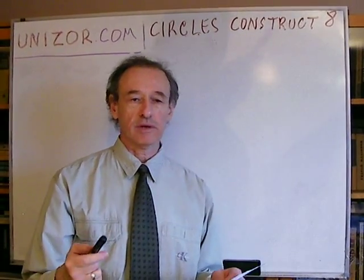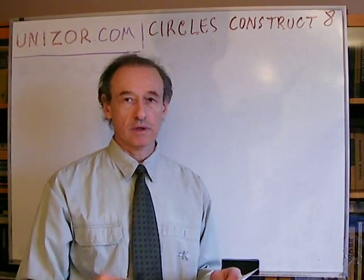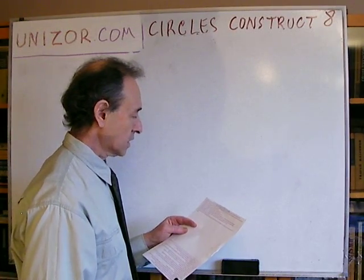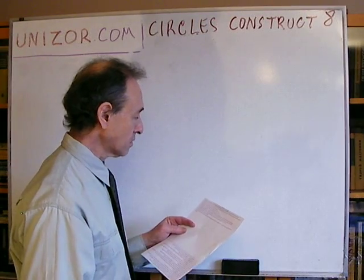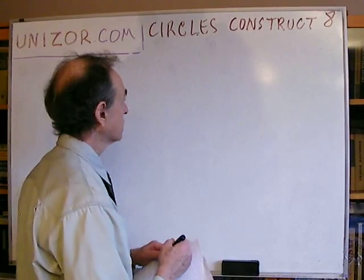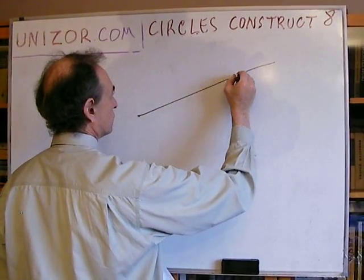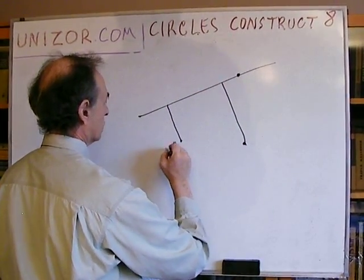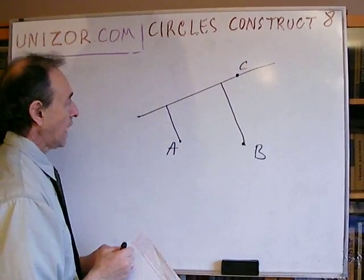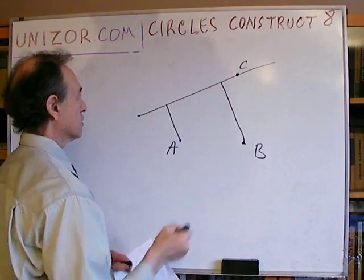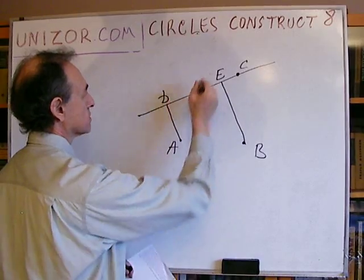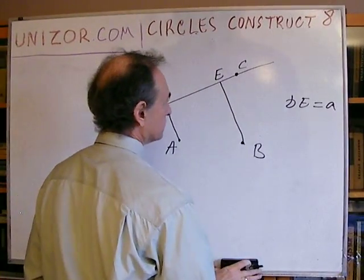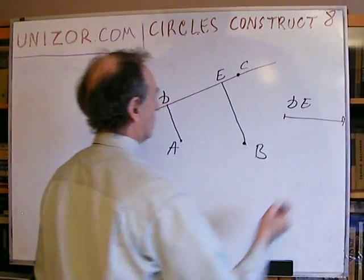If you didn't catch it for whatever reason or if I'm too fast, send me an email and I'll try to be more specific in the return email. Given three points on the plane, construct a line that contains the first point such that the distance between the perpendiculars to this line from two other points equals a given segment. So, we have three points A, B, and C given, and we have to construct the line in such a way that these two perpendiculars DE equal some given segment. So DE is given.